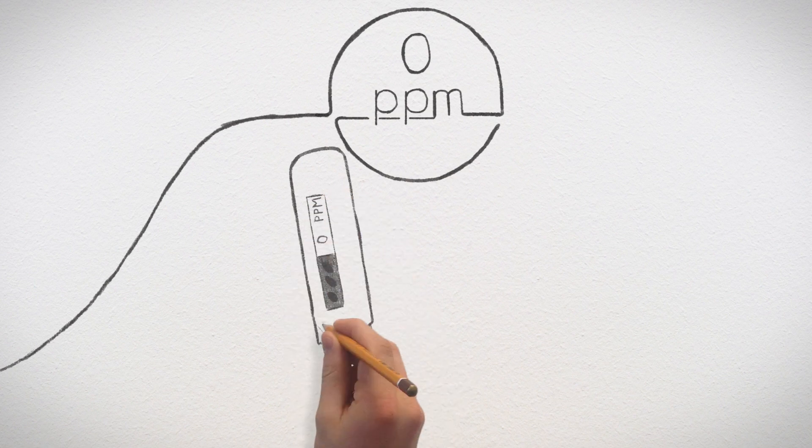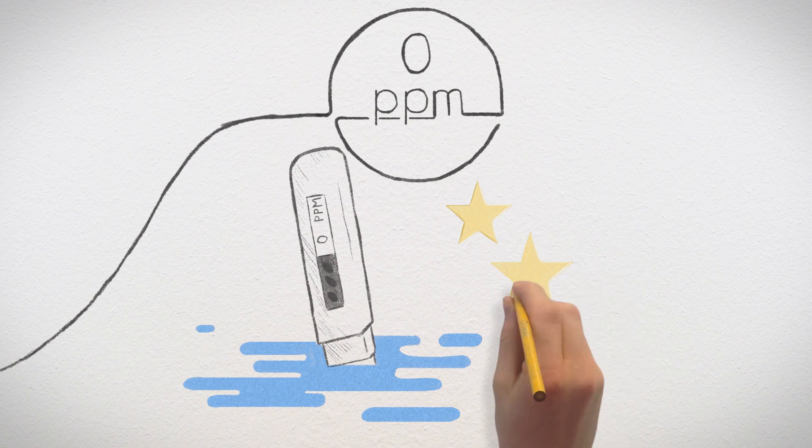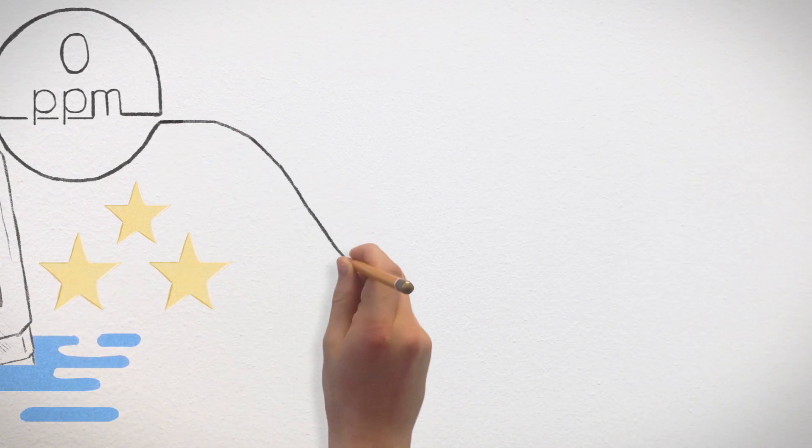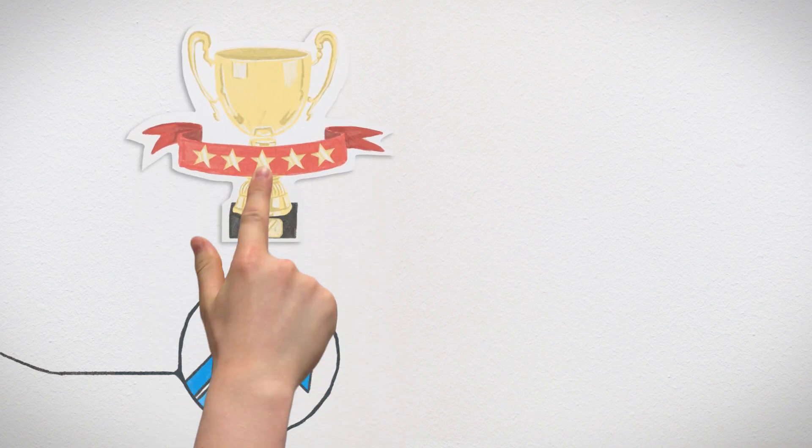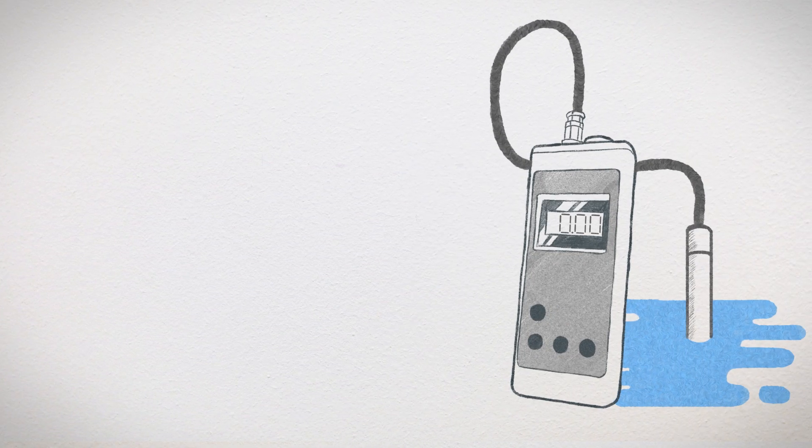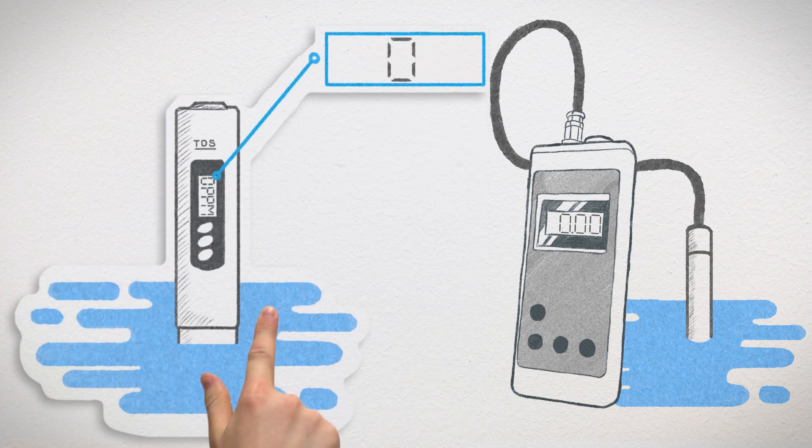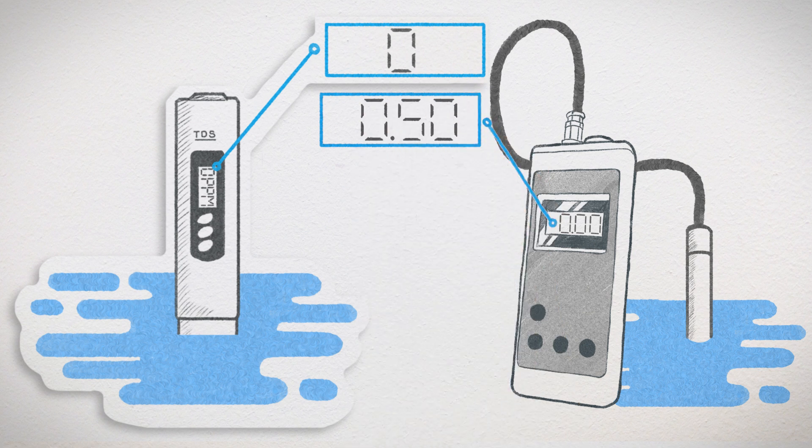Purified water treated to an indicated 0 ppm is good enough to achieve acceptable cleaning results most of the time. However, water treated to even greater levels of purity delivers exceptional cleaning results. Using more sophisticated test equipment reveals that 0 ppm on a handheld TDS meter may actually be 0.5 ppm.